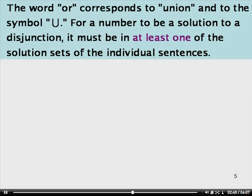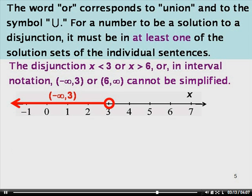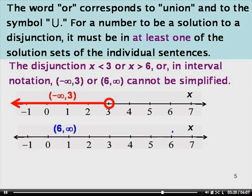So the union of the open interval negative 1 to 3 and the closed interval 0 to 6 is the half open interval negative 1 to 6 where negative 1 is not included and 6 is included. The word OR corresponds to union and to the symbol which looks kind of like a U. For a number to be a solution to a disjunction, a union, it must be in at least one of the solution sets of the individual sentences. The disjunction x is less than 3 or x is greater than 6, or in interval notation the open interval from negative infinity to 3 or 6 to infinity, cannot be simplified. Let's look at the graphs of these two inequalities. Notice that these have nothing in common, so we cannot simplify our disjunction.